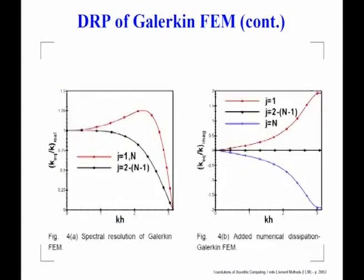As a consequence, in the interior nodes k_equivalent/k, the real part is far more accurate than a CD2 representation. If you had taken CD2, that curve would have been far below. Here you are preserving k_equivalent/k very far into the kh range — up to about 1.3 to 1.4, compared to 0.25 to 0.3 for CD2. The imaginary part is zero since this is a central representation. However, you will have to do something more for the nodes at the end of the domain.